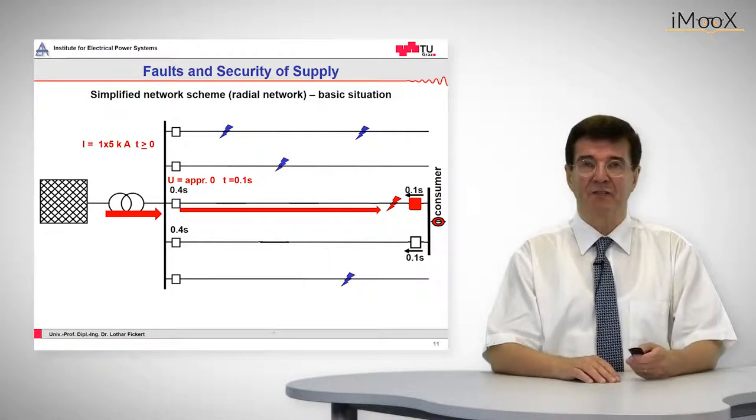So the one with the right direction will trip out. That's given here and we have the standard situation of a radial feeder fault which is cleared after 0.4 seconds by the overcurrent time protection.